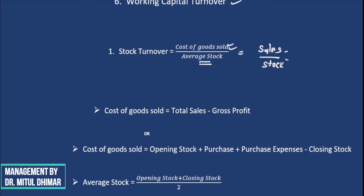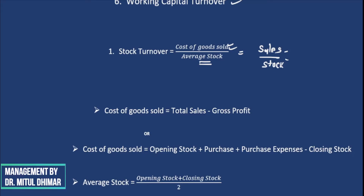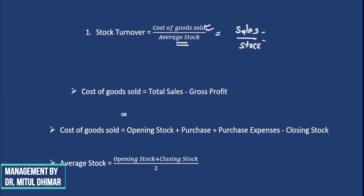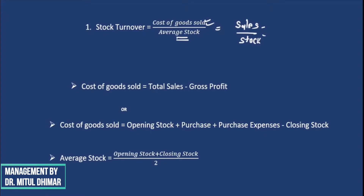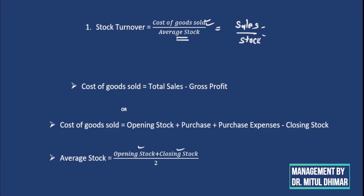The main formula for stock turnover is cost of goods sold divided by average stock. To find cost of goods sold, we remove gross profit from sales: total sales minus gross profit equals COGS. Alternatively, COGS can be found as opening stock plus purchases plus purchase expenses less closing stock. To find average stock, the formula is opening stock plus closing stock divided by two.